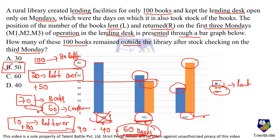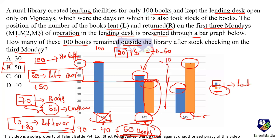Recap: 100 books initially. M1: lend 80 → 20 left. M2: return 50 → 70 total; lend 60 → 10 left. M3: return 80 → 90 total; lend 40 → 50 left. If they lend, books are reduced; if returned, books are added. Final answer: 50 books remain — option B.